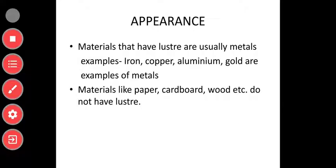Let us begin with appearance. Materials that have luster are usually metals — examples: iron, copper, aluminium, gold. Materials like paper, cardboard, wood, etc. do not have luster. Luster means shine — this model is made of steel which has a shine. Paper, cardboard, and wood do not have shine.